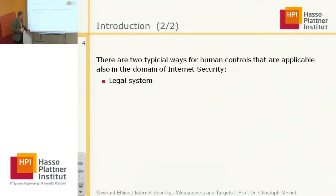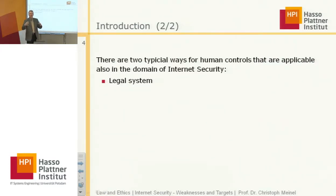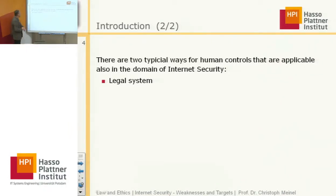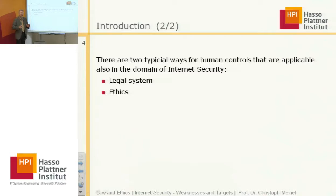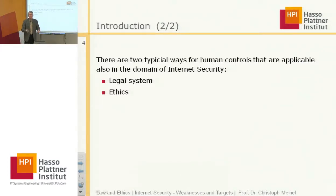Typically, there are two ways in society to control things — not only for IT issues, but all areas. On one side, we have the legal system with rules, judges, police, and prison. People who violate the rules are punished with fines or prison. This is one system of human control in society. The other system is ethics, because it's impossible to rule all of everyday life by means of formal rules. In human society, ethics and moral play a big role in helping humans live together.